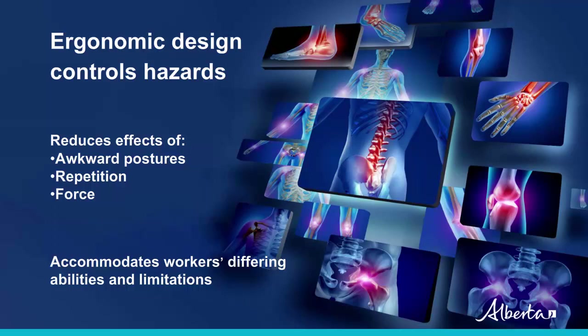Good ergonomic design considers the ways work and associated tasks are organized and arranged to accommodate workers with different abilities and limitations. Let's look at some examples of this, and then go over some pointers on implementing ergonomic controls in your workplace.